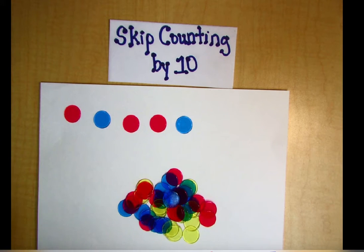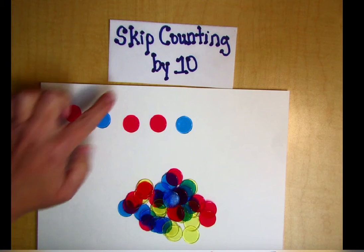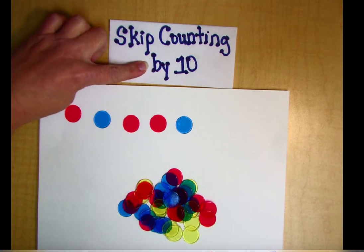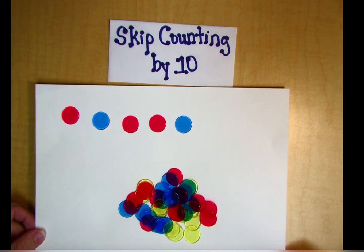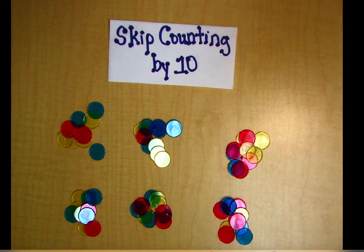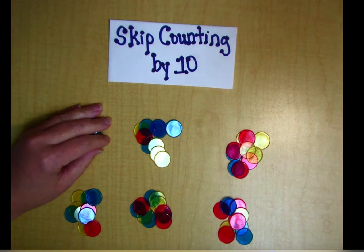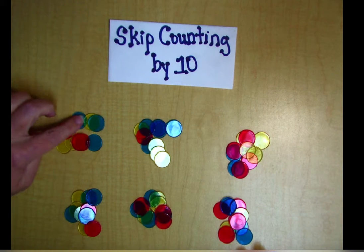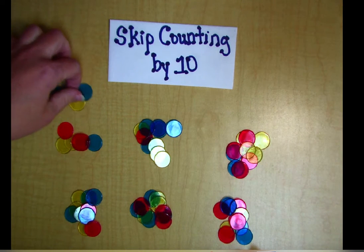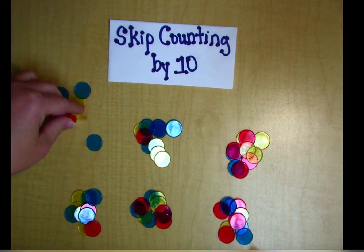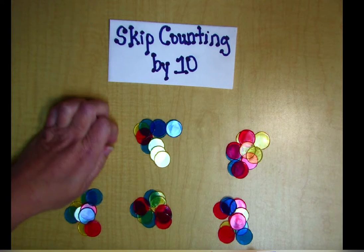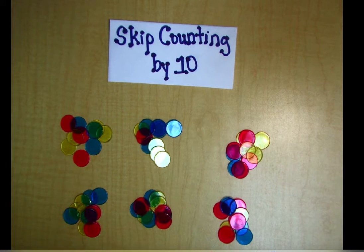And so a more efficient way to count is to count in groups other than one at a time. And today we're going to count 10 at a time. We're skip counting by 10. And so I have piles of chips here and I put 10 in a pile. See, one, two, three, four, five, six, seven, eight, nine, ten. So each one of these little piles has 10 in it.